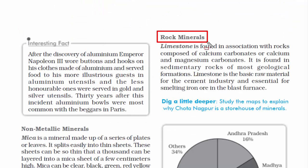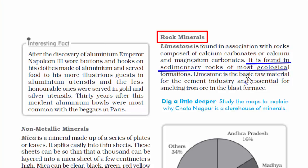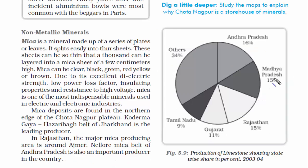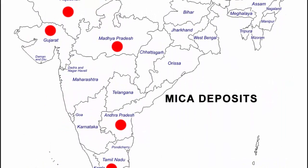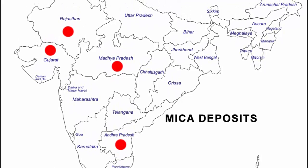The next non-metallic mineral is limestone. It is a rock mineral found in sedimentary rocks. Limestone is the basic raw material for the cement industry and is essential for smelting iron ore in the blast furnace. Limestone is found in Andhra Pradesh, Madhya Pradesh, Rajasthan, Gujarat, and Tamil Nadu.